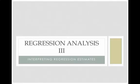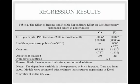This is regression analysis part 3: interpreting regression estimates. We're working toward a table that shows the effect of income (x1) and health expenditure effort (x2) on life expectancy (y). The table has a descriptive, centered title with 'standard errors in parentheses' noted underneath. Regression gives you both the standard error and the coefficients.